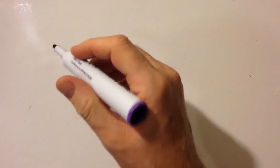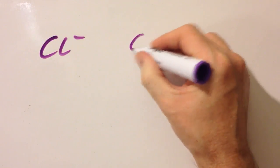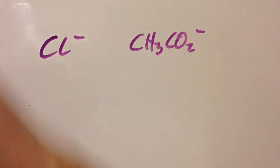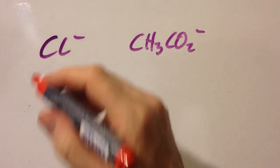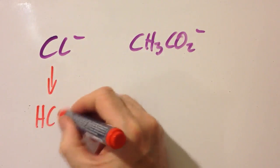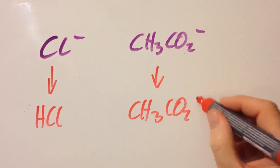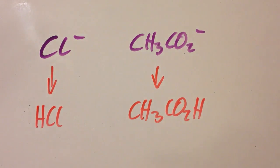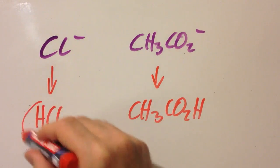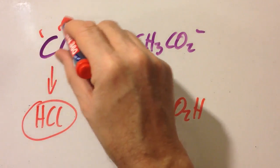To work out which species is a weak conjugate base, you need to know which acid it came from. One came from hydrochloric acid and one came from ethanoic acid. A strong acid has a weak conjugate base — hydrochloric acid is a strong acid, so its conjugate base is the weak conjugate base.